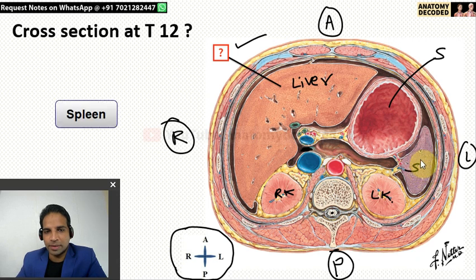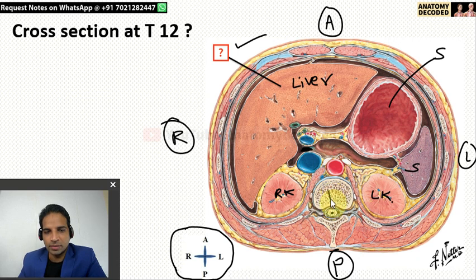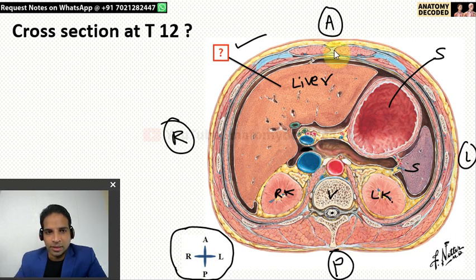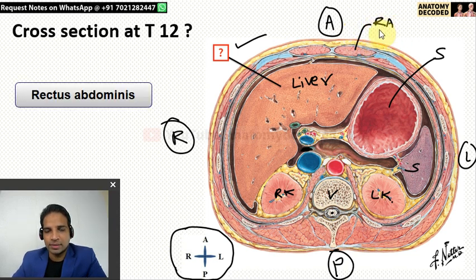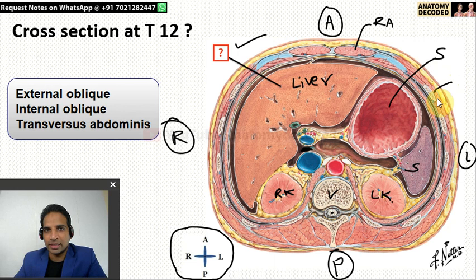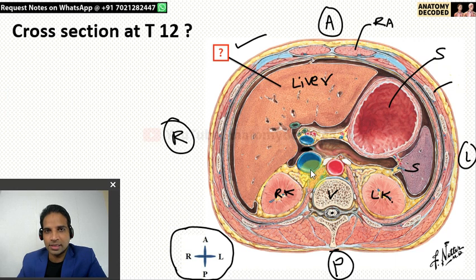This 'S' stands for the spleen, which is present on the left side. Apart from that, here we can see the body of the T12 vertebrae, then here is the spinal cord. Adjacent to the spinous process of the vertebrae, we can see the erector spinae group of muscles. On the anterior aspect, this is the rectus abdominis, and these are the muscles of the anterior abdominal wall — the three muscles: external oblique, internal oblique and transversus abdominis. These are all the various structures seen in this particular section.